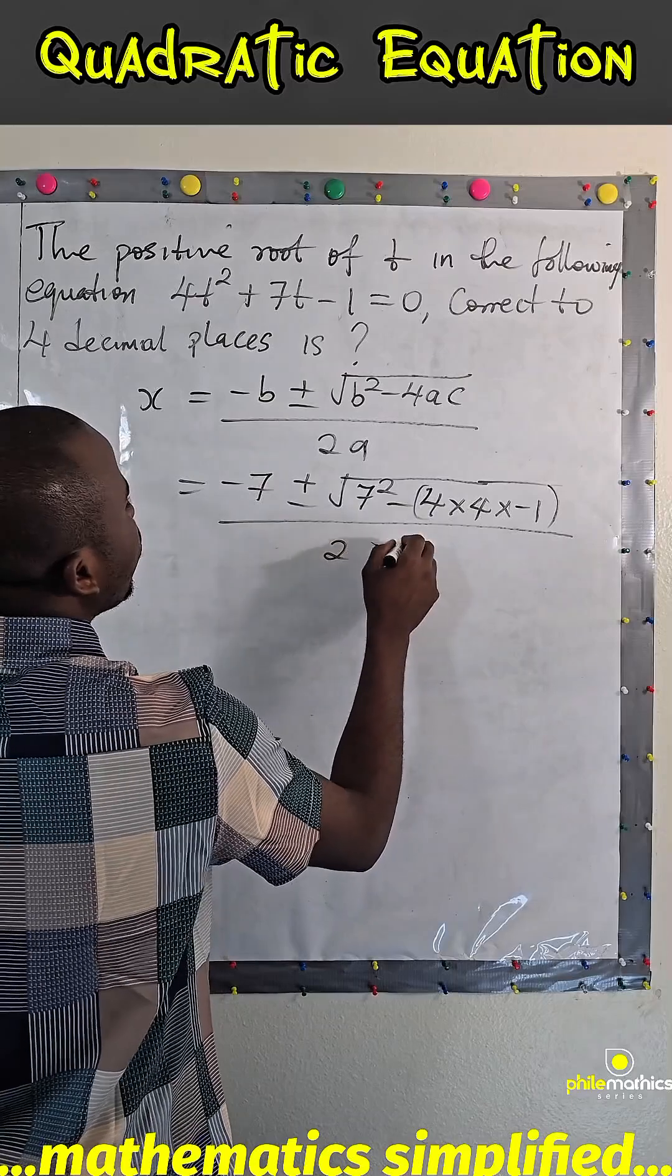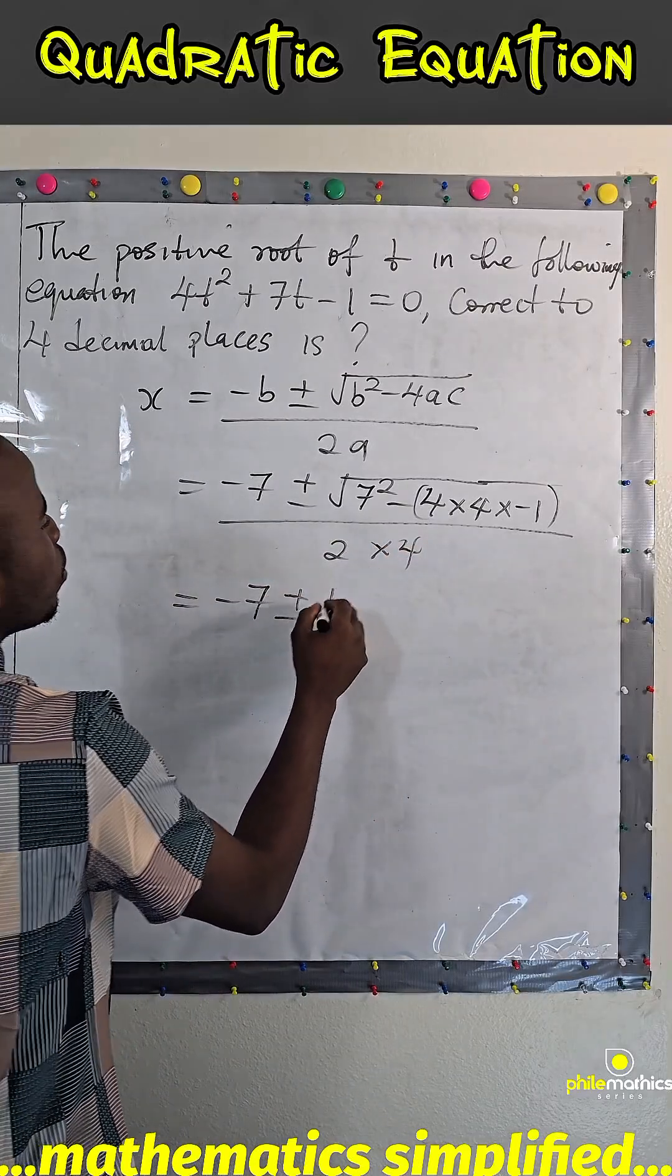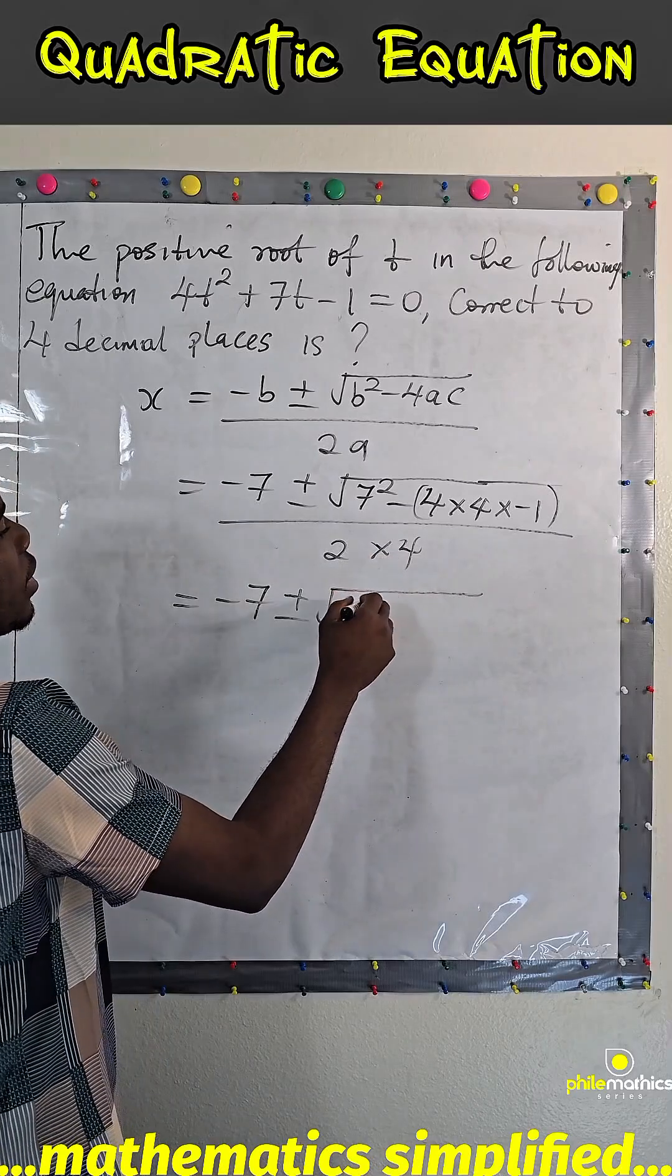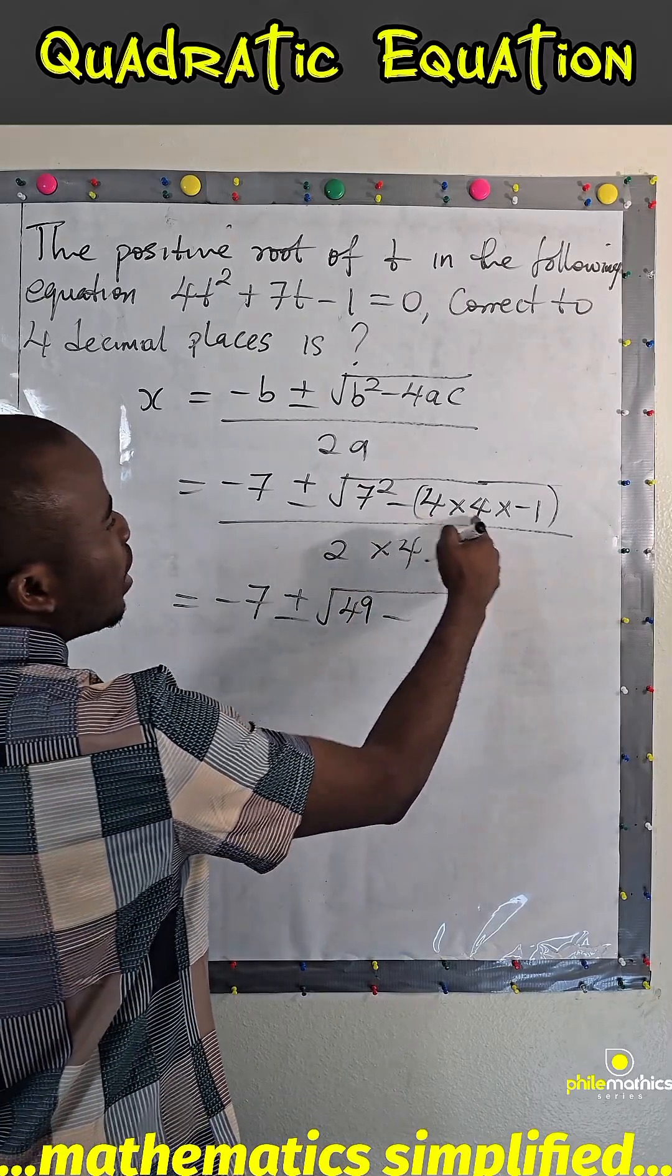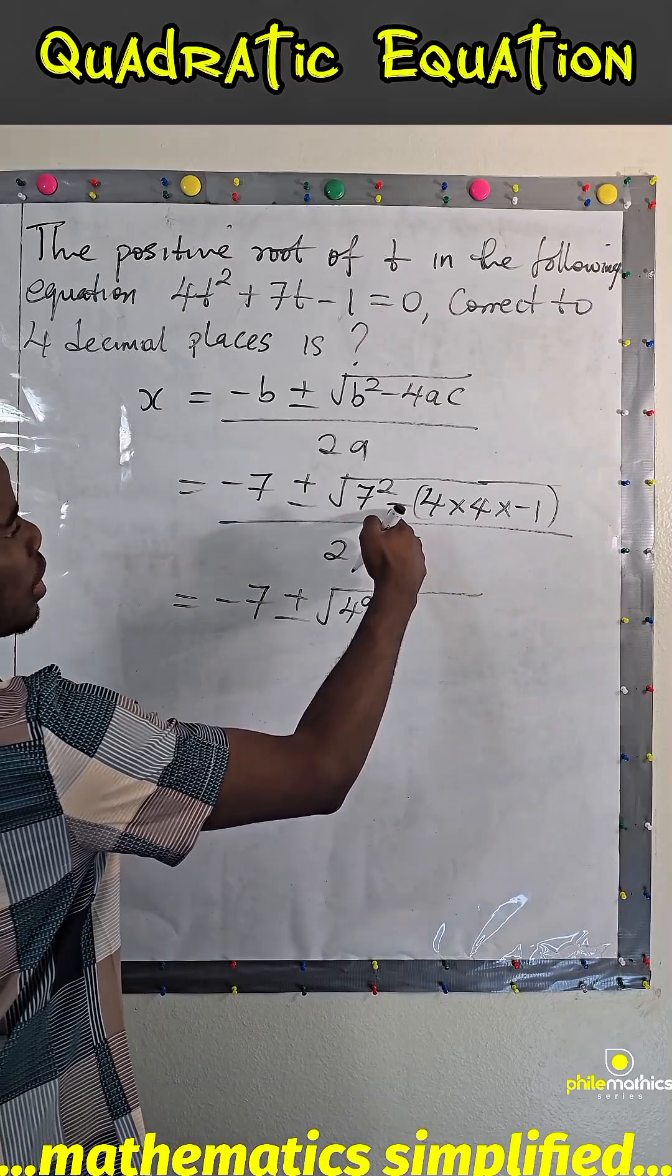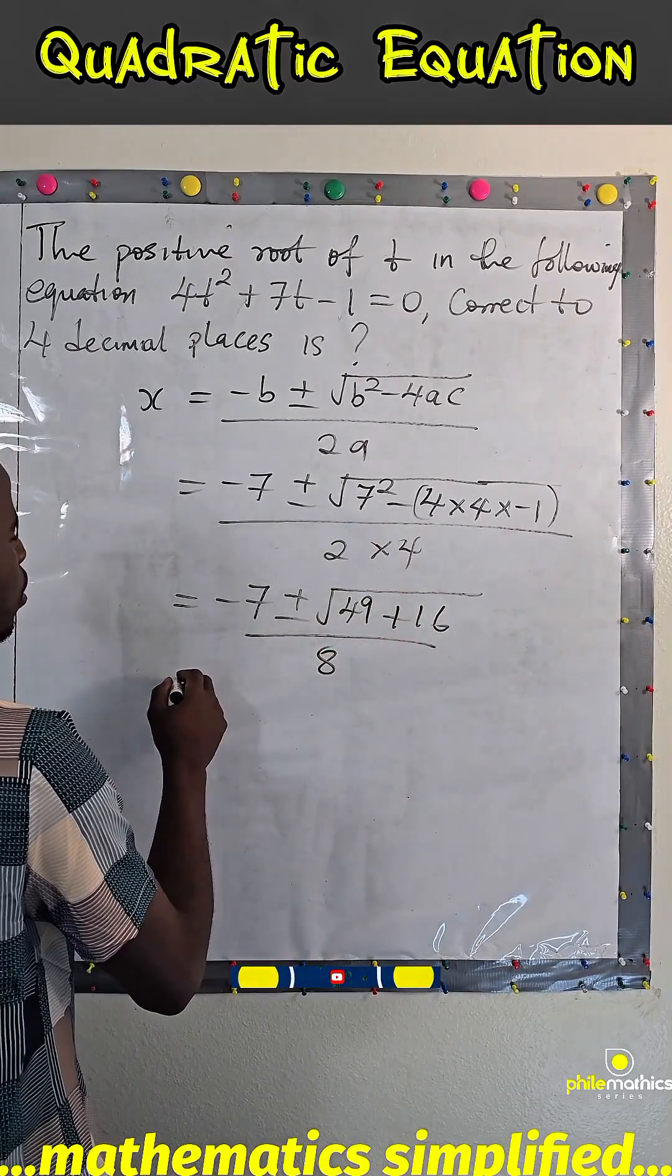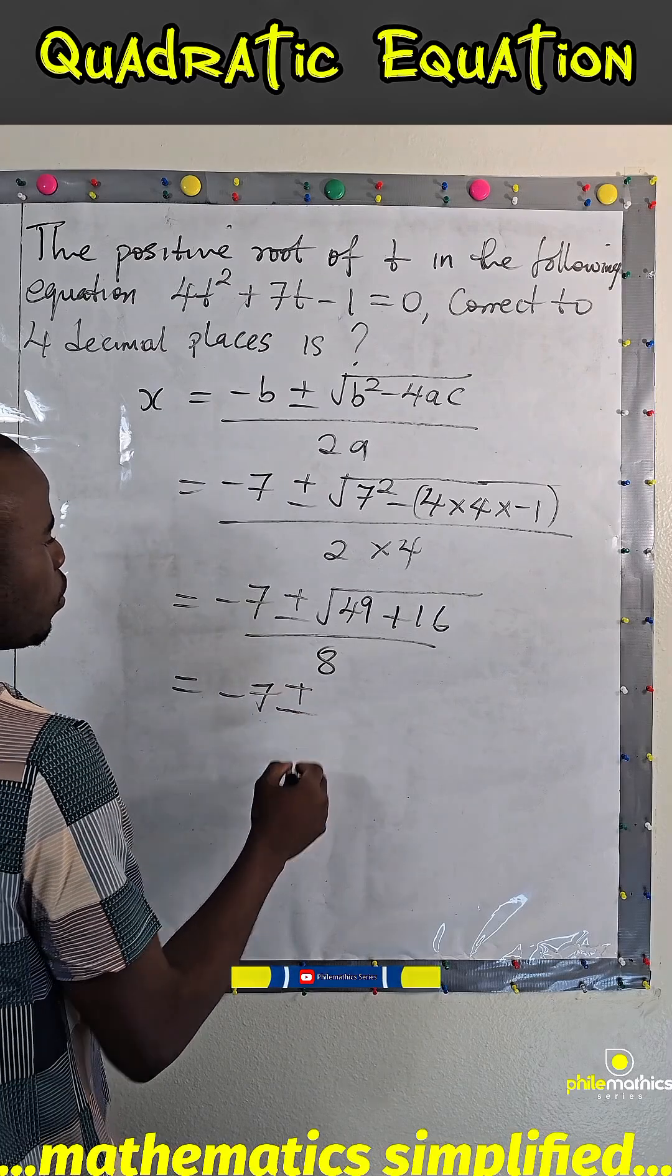Over 2 times 4. And this is -7 ± √(49...). 4 times 4 is 16, 16 times -1 is -16, so this is plus 16 over 8. -7 ± √(49 + 16)...